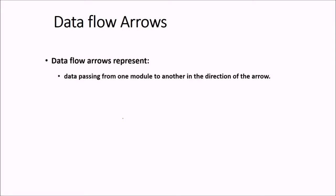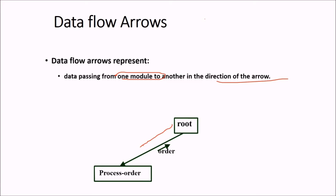Then data flow arrows. What are these? And how they are different from the arrows we discussed? This data flow represents the data which is passing from one module to another in the direction of the arrow. So these are data flow arrows like this. Root will be invoking or calling process order or giving its control to the process order. And the data which is an order will be passed from process order to the root.